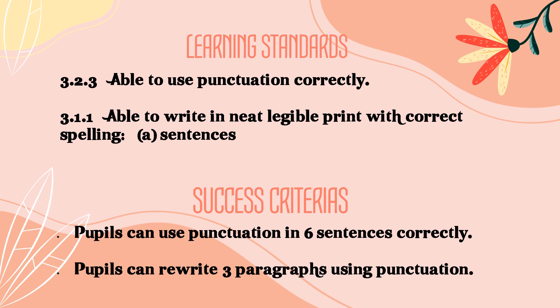The learning standards are 3.2.3: able to use punctuation correctly, and 3.1.1: able to write in neat, legible print with correct spelling in sentences. The success criteria are: pupils can use punctuation in 6 sentences correctly — in that page there are 6 sentences and you need to correct the punctuation marks — and pupils can rewrite 3 paragraphs using correct punctuation.